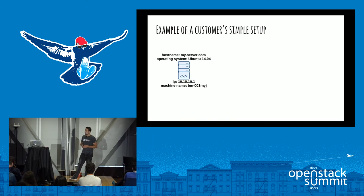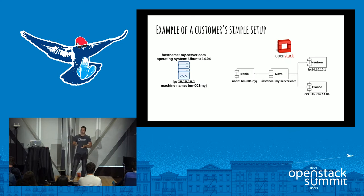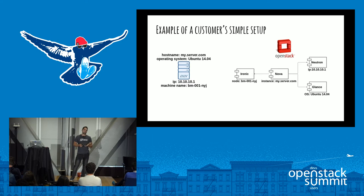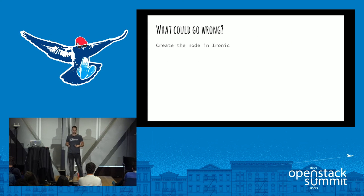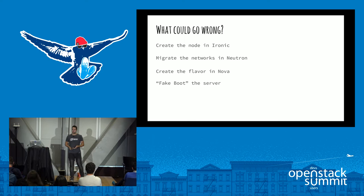Let me show you a simple customer setup. Basically they have one server — a hostname, an OS, an IP — and for us, a representation of the machine in our inventory. Say that bare metal is in New York. What we want to do is fairly simple: represent the hardware in Ironic by creating the node, represent it in Nova by creating the instance with the hostname, move the IPs into Neutron, and handle the OS in Glance. The steps: create the node in Ironic, move the network in Neutron, create a flavor in Nova to represent that hardware, then fake-boot the server so the customer doesn't lose their data.